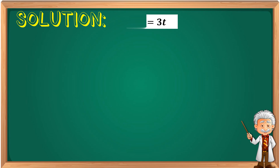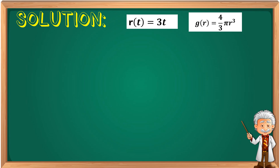Solution: Let r(t) = 3t — this is the representation of our radius in the spherical balloon. And g(r) = (4/3)πr³ is the representation of the volume inside the inflated balloon. Note that g(r) = (4/3)πr³ can be associated with the formula for finding the volume of a sphere. So, g∘r = g(r(t)), meaning we substitute r(t) into the function g(r). In place of r, we substitute 3t.